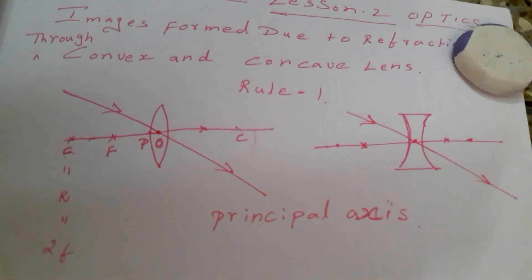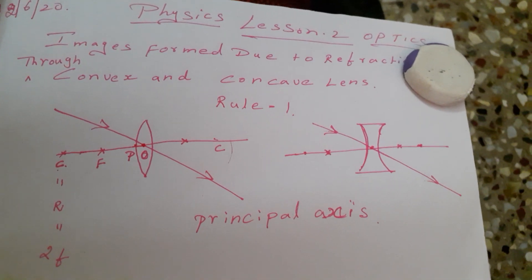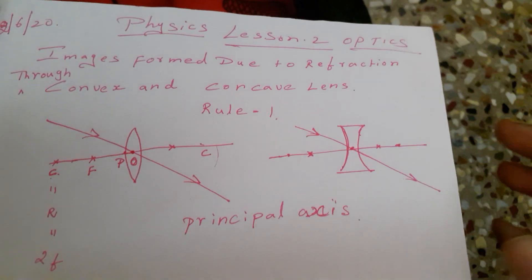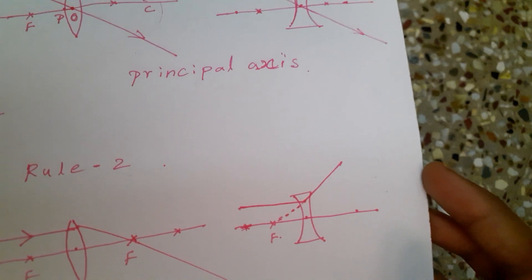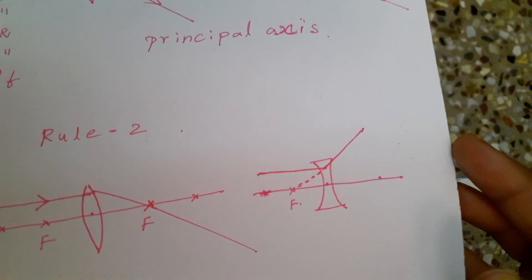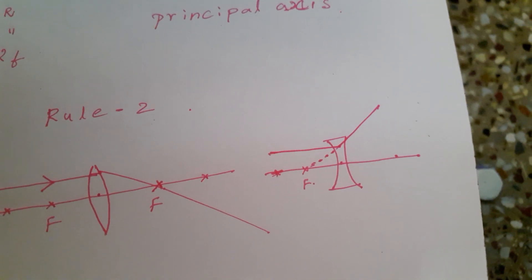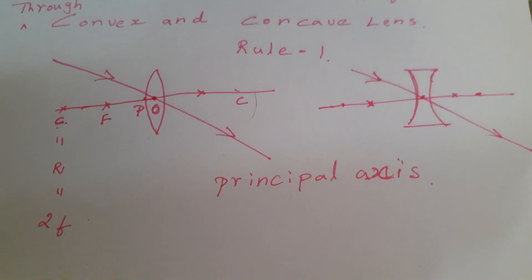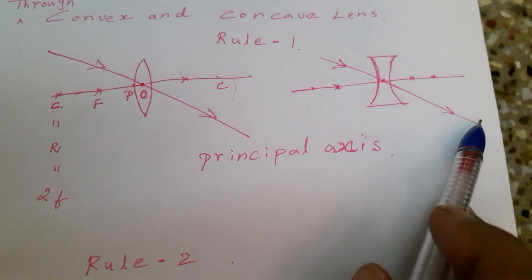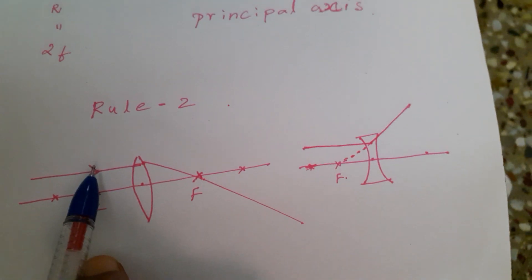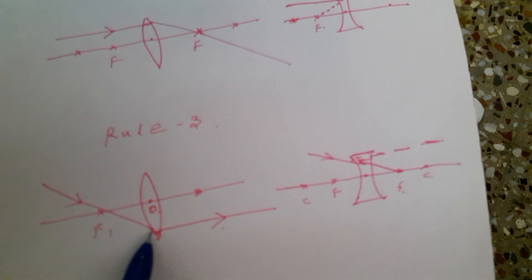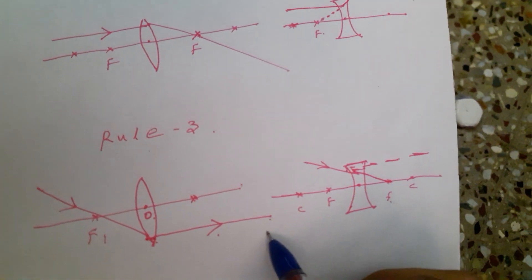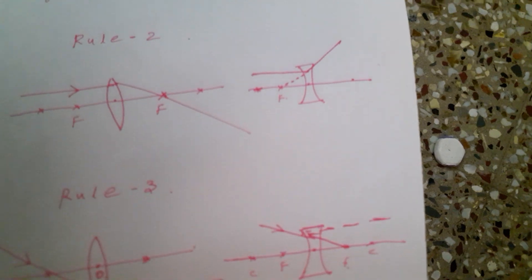These three are the rules for convex and concave lenses. This is an important 5-mark answer for you: 'Rules for images formed due to refraction through convex and concave lenses.' When an object is placed in front of a lens, the light from the object falls on the lens. The position, size, and nature of the image formed can be understood only if we know certain basic rules: first, a ray passing through the optic center has no deviation; second, a ray parallel to the principal axis will converge or diverge through the principal focus; third, a ray passing through the focal point will be refracted parallel to the principal axis. The same applies for the concave lens.